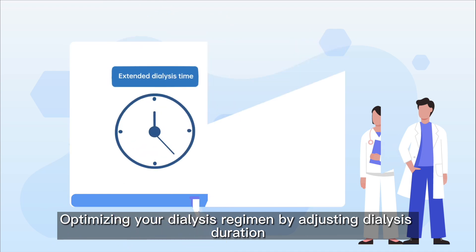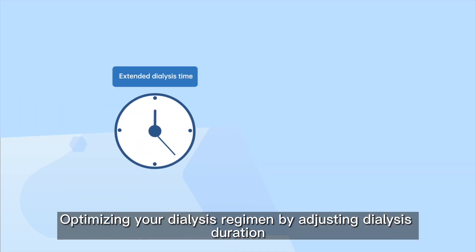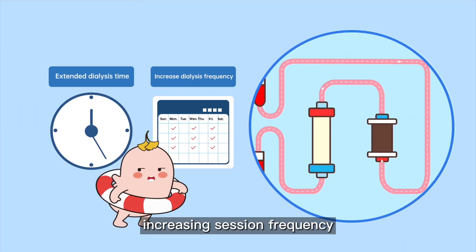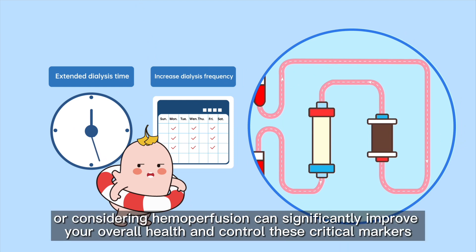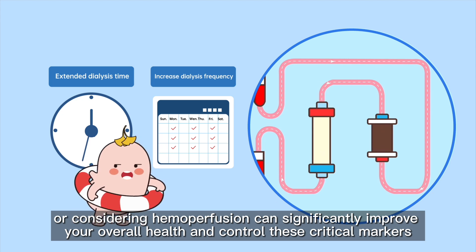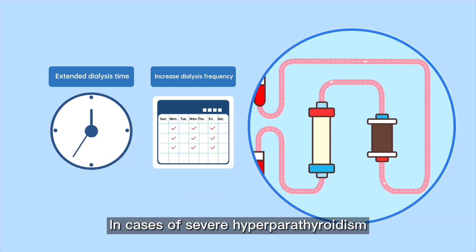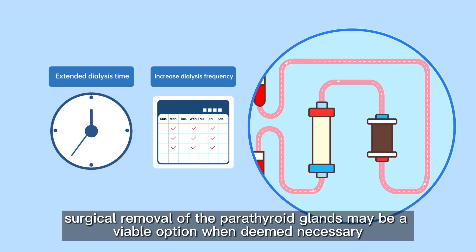Optimizing your dialysis regimen by adjusting dialysis duration, increasing session frequency, or considering hemoperfusion can significantly improve your overall health and control these critical markers. In cases of severe hyperparathyroidism, surgical removal of the parathyroid glands may be a viable option when deemed necessary.